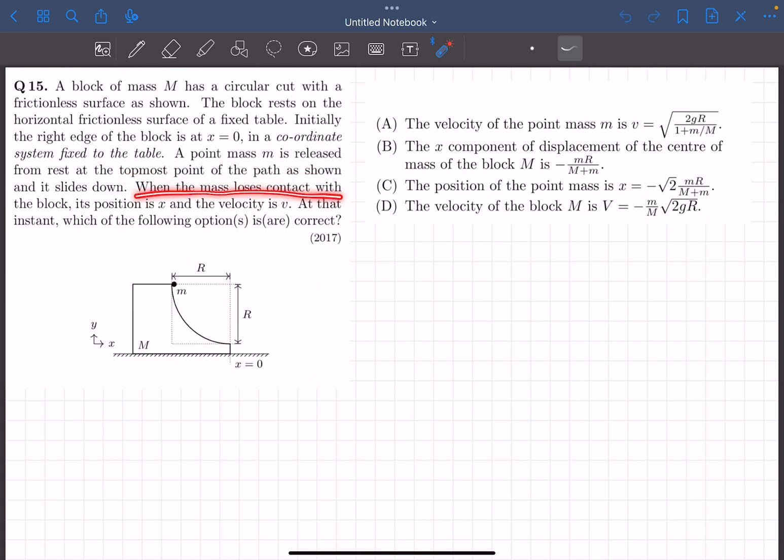When the mass loses contact with the block, its position is x and its velocity is v. So just before this mass leaves this block, its velocity v is given and its position x is given.